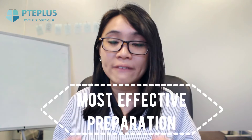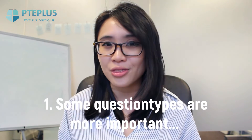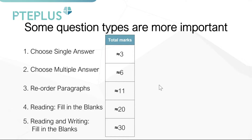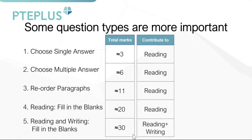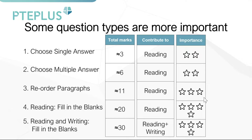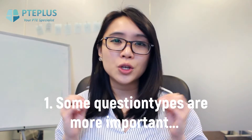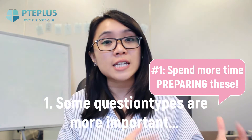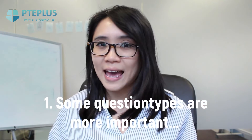Now it comes to how we can be most effective when preparing for the exam. The first thing to be clear about is that some question types are more important than others. The two most important are fill in the blanks — they carry the most marks and contribute to two modules — followed by reorder paragraphs, which still has quite a few marks. The multiple choice questions are the least critical. This means you should allocate more study time to the higher-value question types.